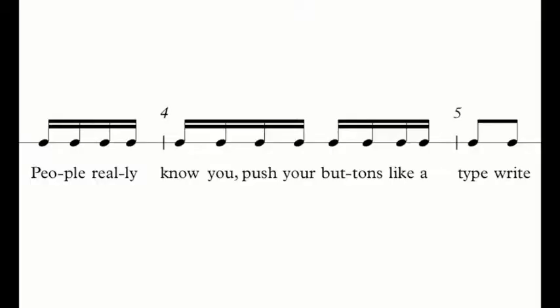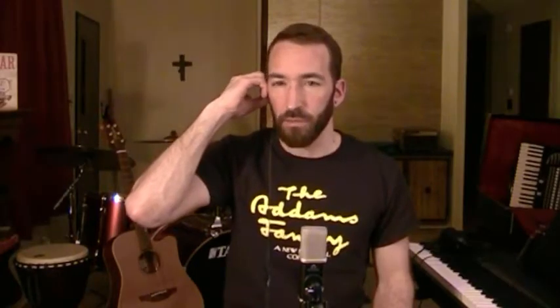Let's jump to measures three, four, and five. Here we have sort of a complete sentence, so we're going to try putting the words on this rhythm. We'll go a little bit slower. One, two, ready, go. Takadimi, takadimi, takadimi, ta-di. Let's put those words on it — still kind of slow. One, two, ready, go. People really know you push your buttons like a typewrite. Takadimi, takadimi, takadimi, ta-di.